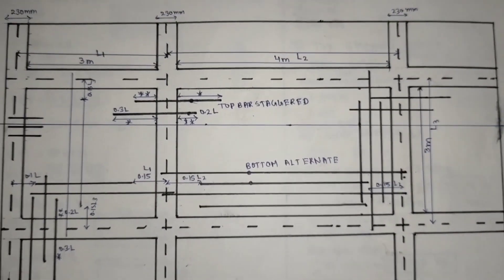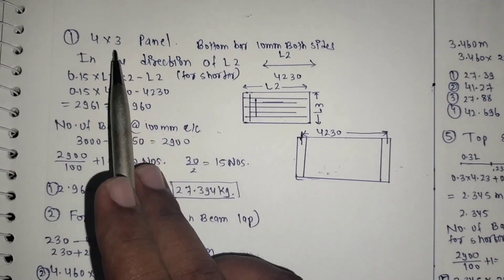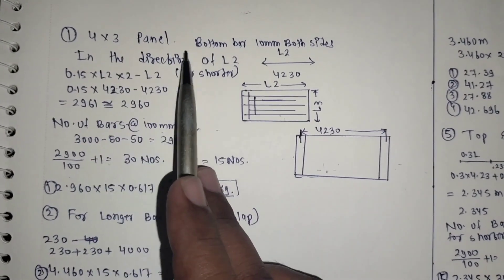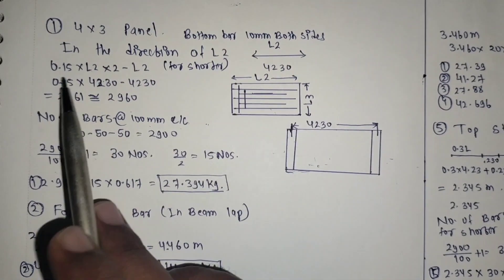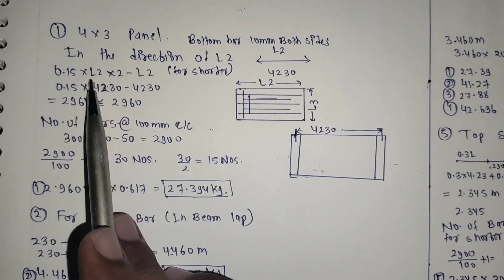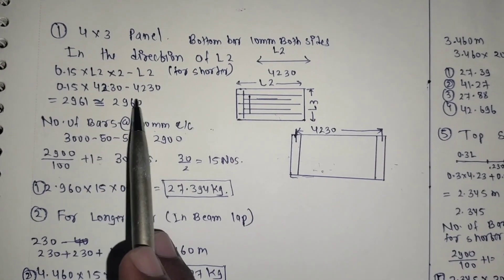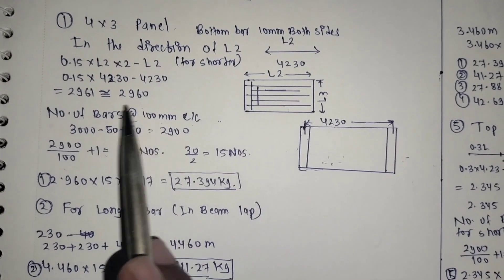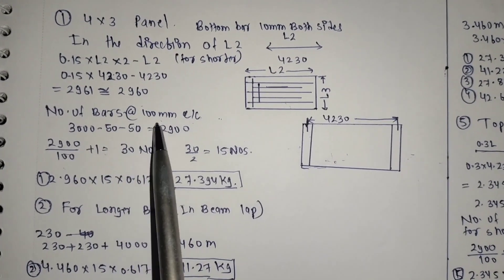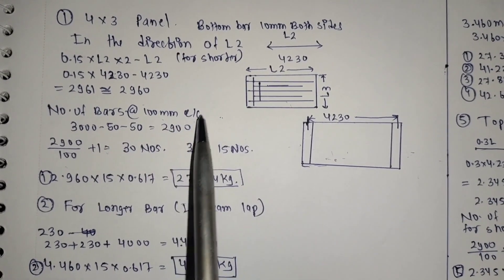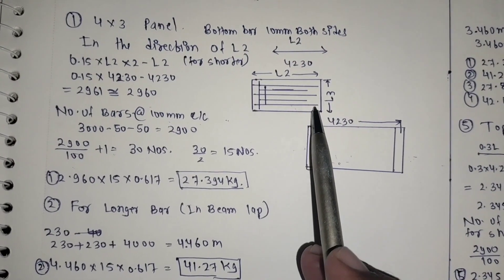I have taken as one example a 4 by 3 meter panel. The bottom bar is 10 mm, provided on both sides. For cutting length: 0.15 L2 into 2 minus L2, you will get 2.960 meters. Number of bars at 100 mm center to center — for this direction we calculate how many bars are provided.